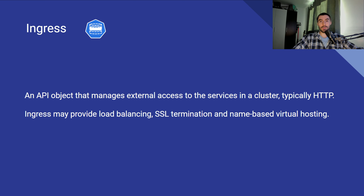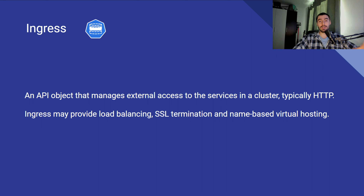Now that we understand controllers, let's talk about the subject of this video: ingresses. As you can see on the slide, ingresses are Kubernetes objects which are tasked to manage traffic coming into the cluster — ingress internal traffic, traffic that comes inside of the cluster. The typical protocol is HTTP. There are a lot of cool features that come with ingresses, and I want to make something very clear: ingresses operate over HTTP.